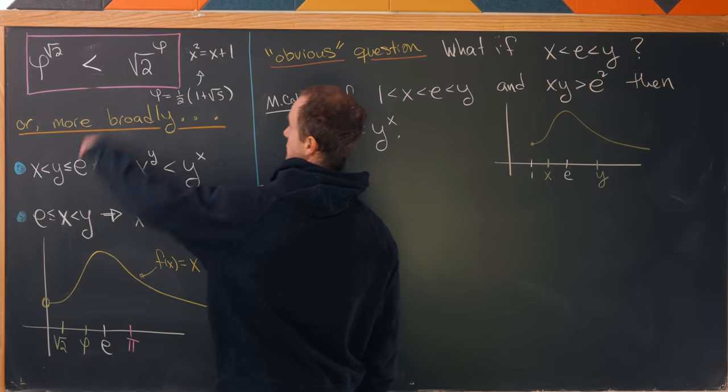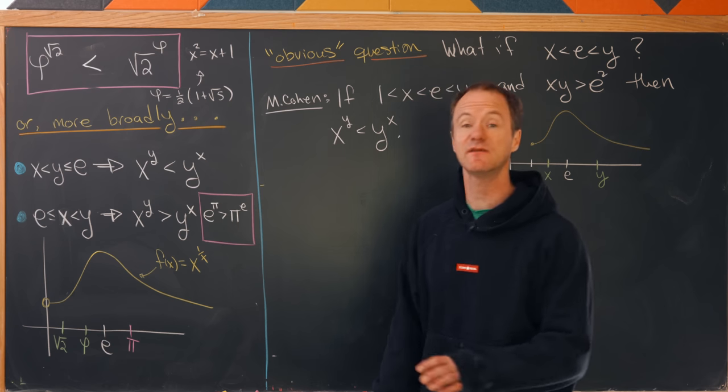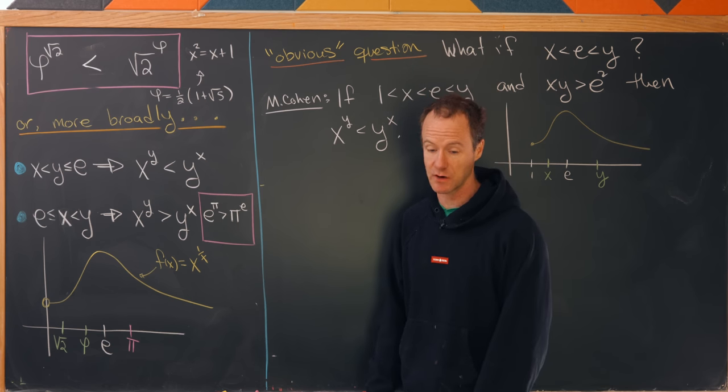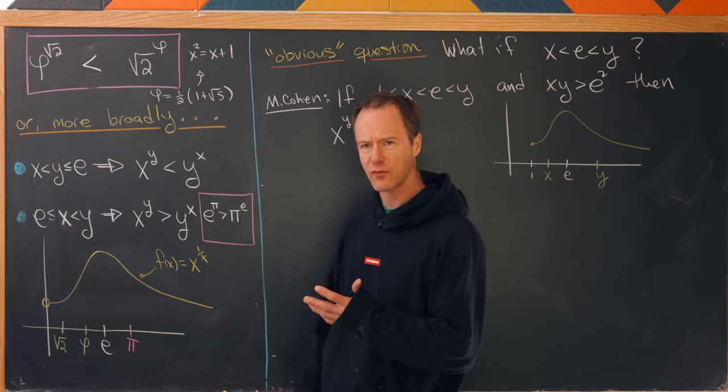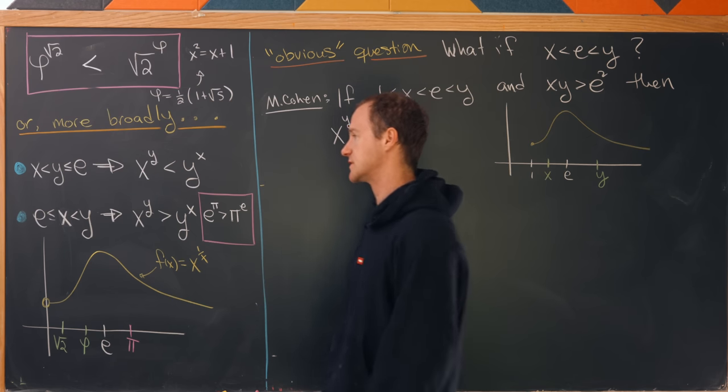We showed that the golden ratio to the power square root of 2 is in fact less than the square root of 2 to the golden ratio. And more broadly, we proved the following result.